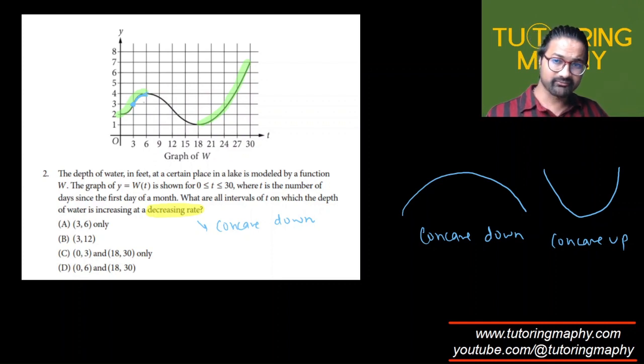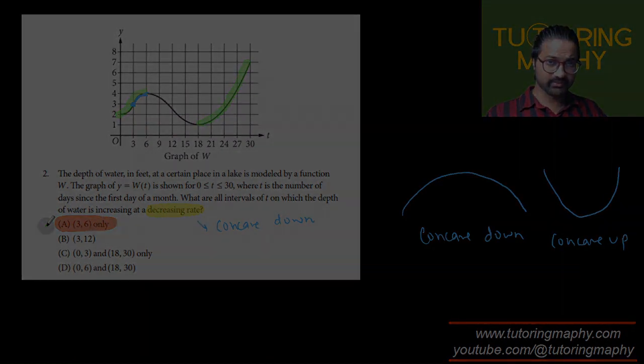And frowning face is concave down, and that's what we want. So the answer is going to be option A, which is 3 to 6 only. That was a really good question. I hope that makes sense.